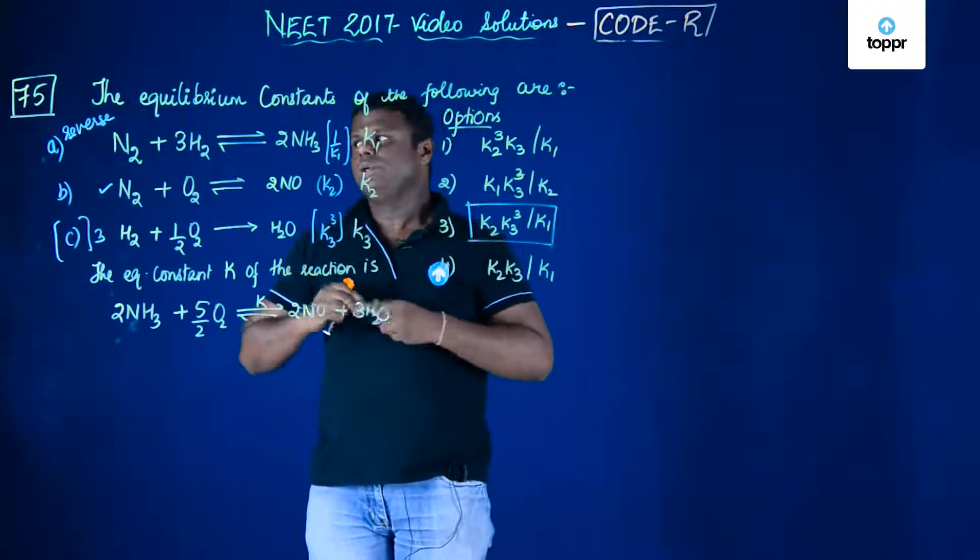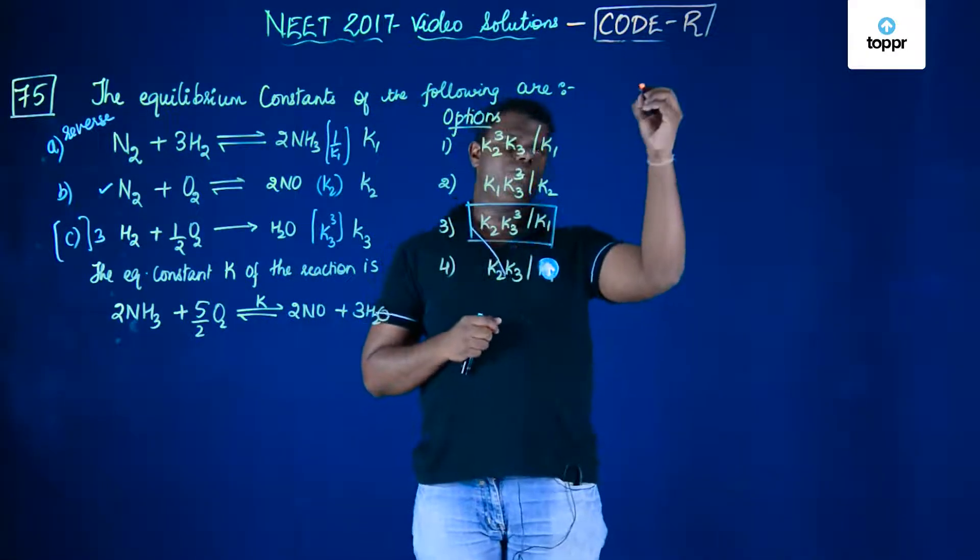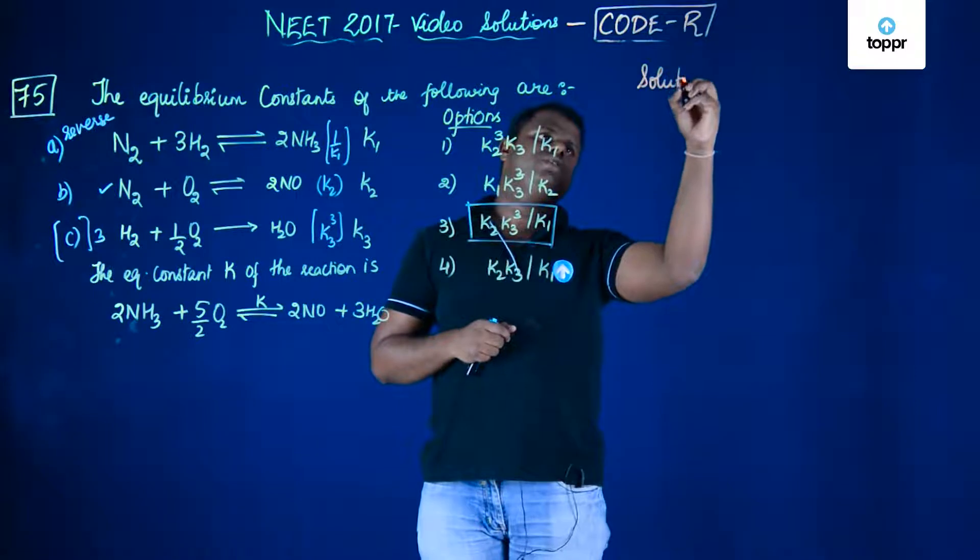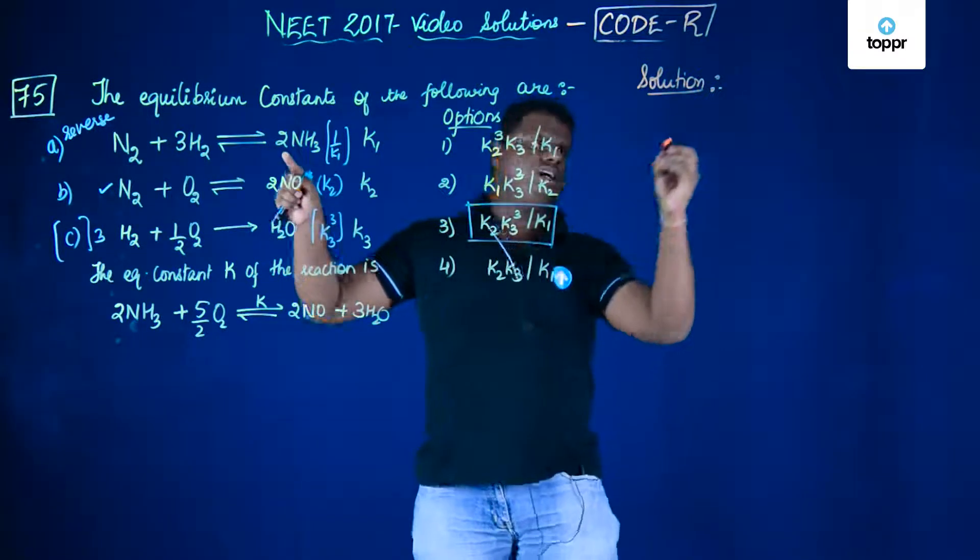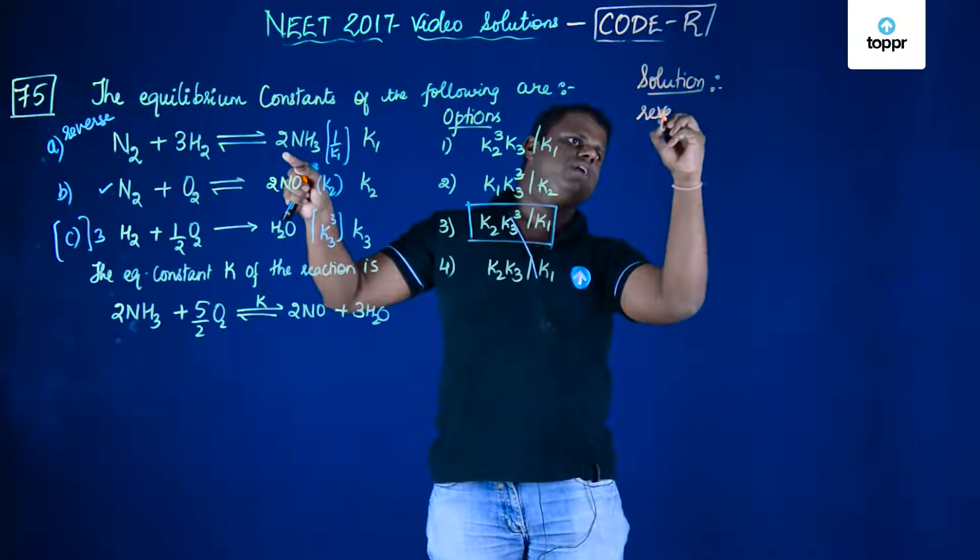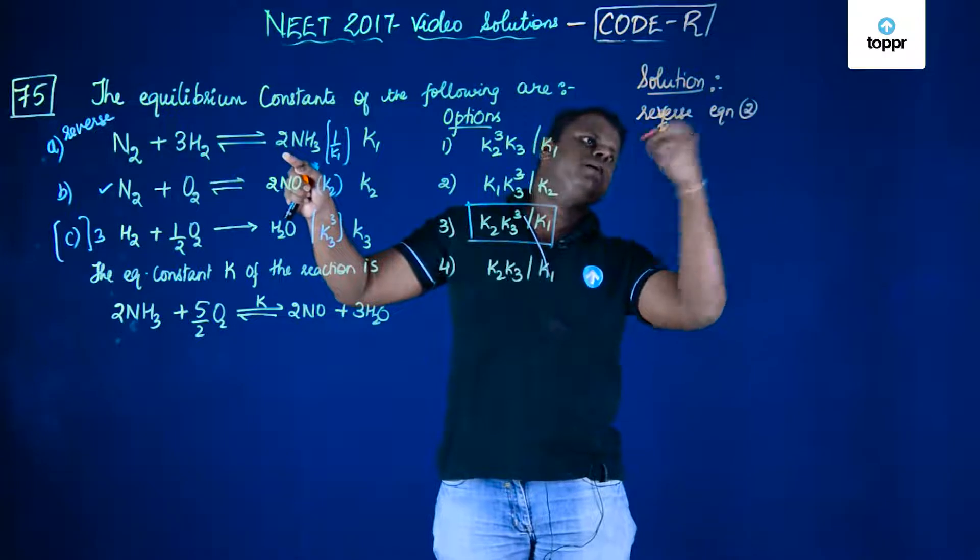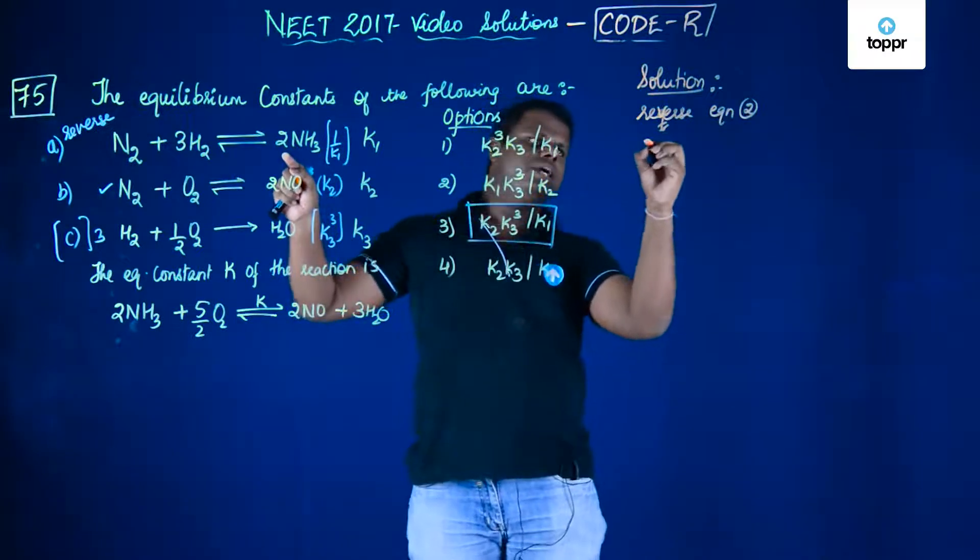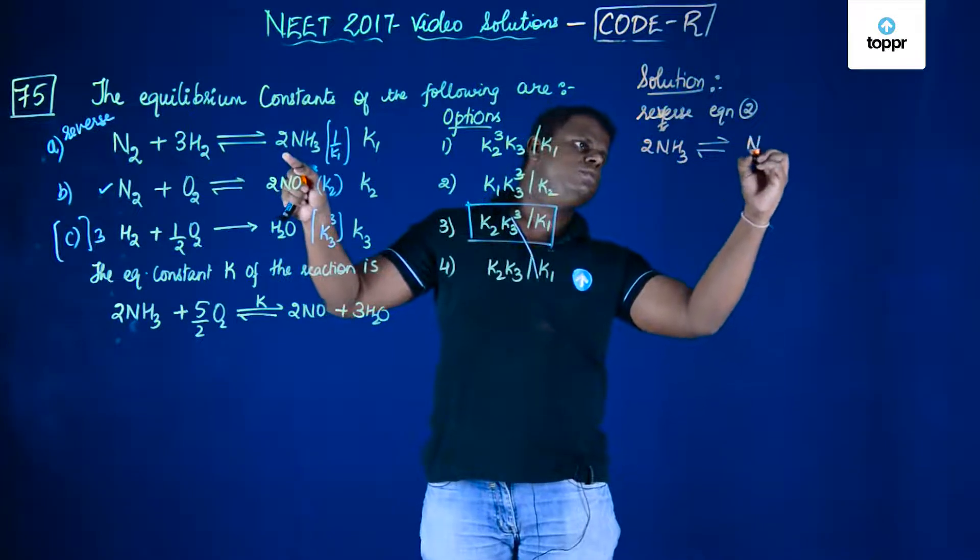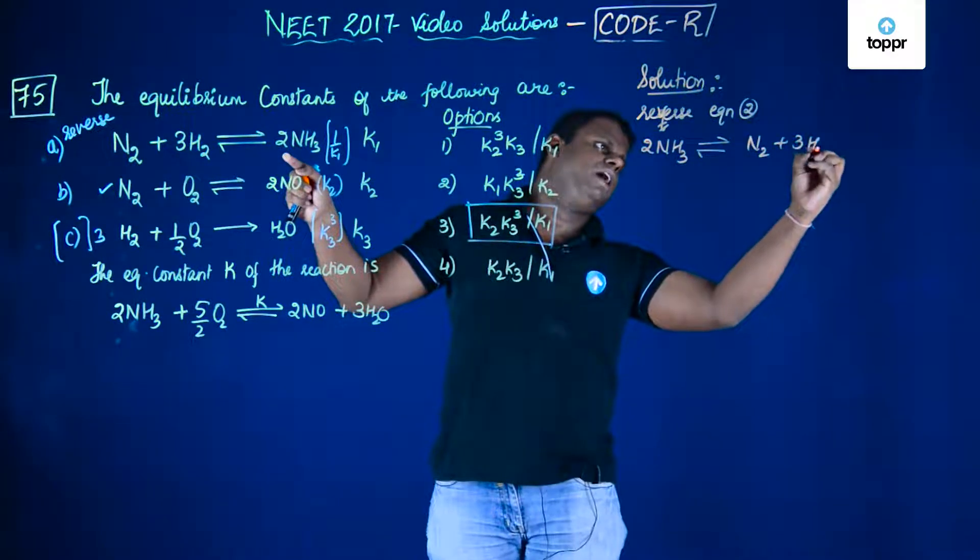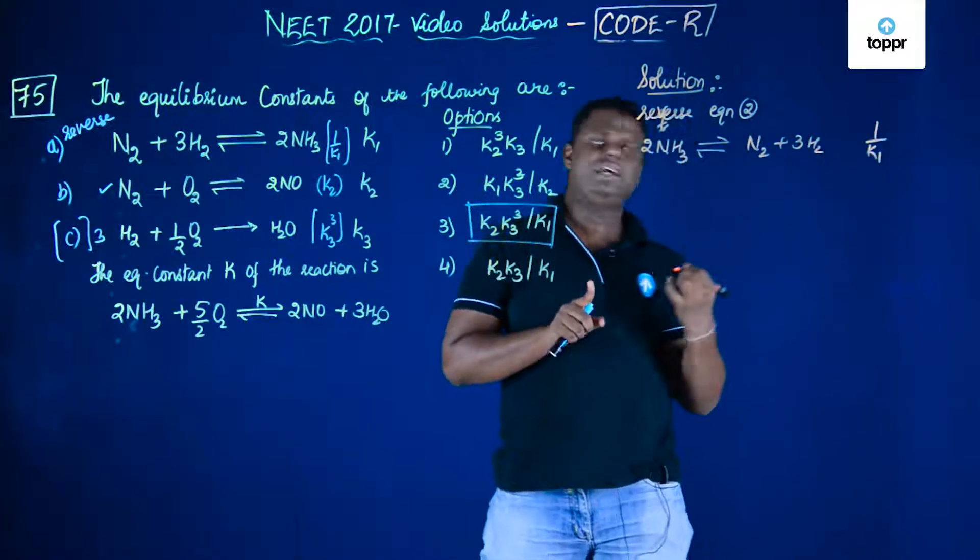Now let's do this in the actual manner which is a little bit time consuming. I am going to start with the solution. Let's reverse equation A. When you reverse equation A, you get 2NH3 in equilibrium with N2 plus 3H2. I am not mentioning the physical state. The equilibrium constant becomes 1 by k1.